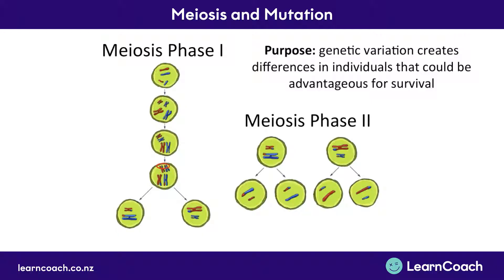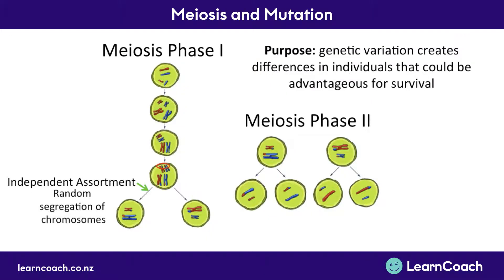There are three details you're going to need to know about how meiosis causes genetic variation. The first is called independent assortment. Independent assortment means that you've taken a pair of chromosomes and they're randomly getting segregated into two separate parts. This occurs in meiosis phase 1.